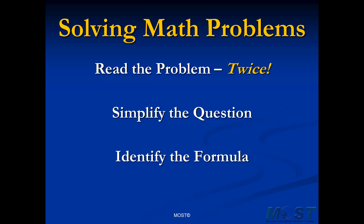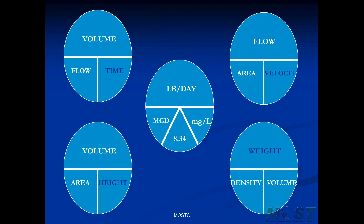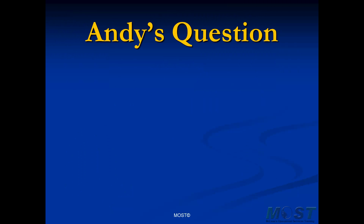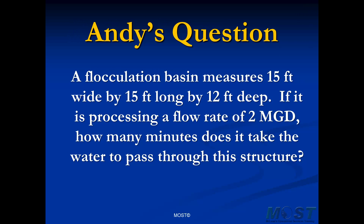And then hone in on the equation or formula that's going to get you to the answer. Finally, once we have our formula established, look for the variables — the information in the problem that will allow us to calculate our answer. When it comes to identifying the formula, at MOST we have identified five key formulas depicted here with these formula wheels. Essentially, every problem you will encounter will be solved by one of these formulas, or perhaps, as in Andy's question's case, by a combination of these formulas.